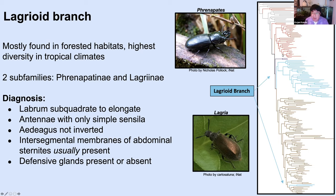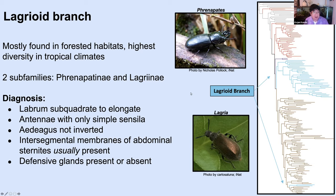Diagnosing this branch of Tenebrionidae is a bit tricky. Their labrum is subquadrate-elongate in shape, and the tegmen only has simple syncyla. The aedeagus isn't inverted — that's how it's distinguished from the whole Pamelioid branch — but there's an exception to that rule in Lagreines as well. The intersegmental membrane of the terminal abdominal sternites is usually present, and defensive glands are either present or absent. The Lagreini in particular shows a fairly high diversity of defensive gland forms.